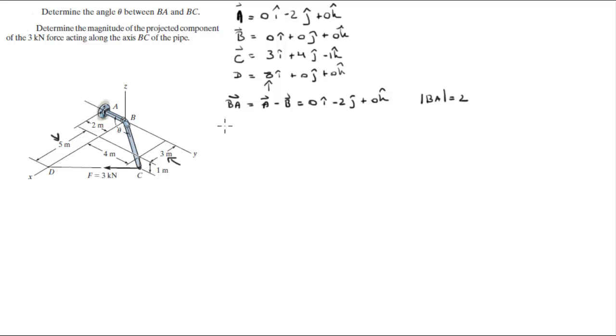And the BC vector is C minus B and it comes out to be 3i plus 4j minus 1k. The magnitude of this vector is found by doing the X component squared plus the Y component squared plus the Z component squared, which gives you 5.1.